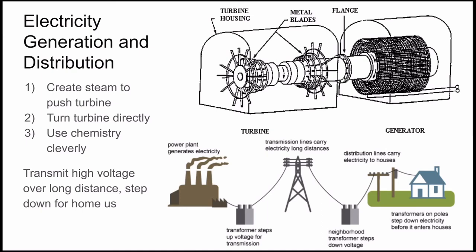The sources mainly differ in how they turn a turbine. Fossil fuels, biofuels, nuclear, geothermal, and concentrated solar power use heat engines to create steam — gaseous water — to push the turbine. Wind and hydroelectric sources turn the turbine directly using a moving fluid. Photovoltaic solar cells and hydrogen fuel cells use chemistry to generate a current of electrons instead of a turbine.